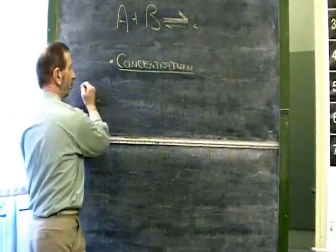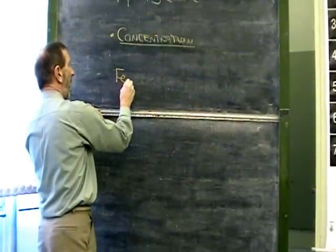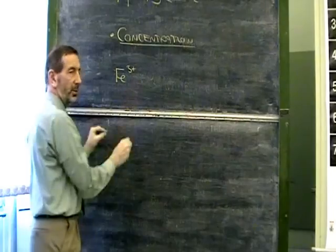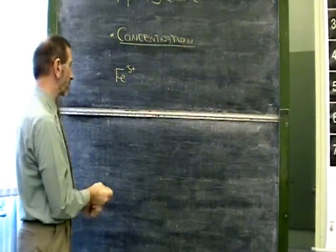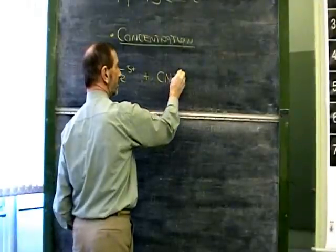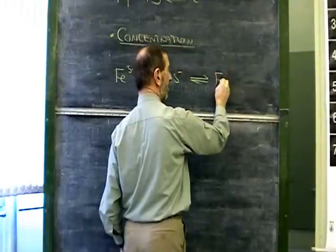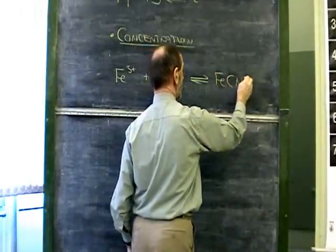Well, here's a chemical reaction you may have been shown. It's a reaction between iron 3+ ions, and you don't need to worry about these particular chemicals, iron 3+ ions, thiocyanate ions, and when these react together, we produce something which we'll call iron thiocyanate.